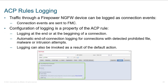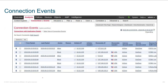There's also a logging tab where you can configure logging. Even if you allow a transaction, you can still generate a notification. You can log at the beginning of the connection, at the end, or both. You can send those events to the event viewer, to syslog, or generate SNMP traps — all supported under the logging tab.